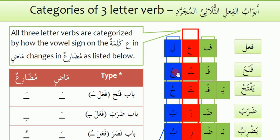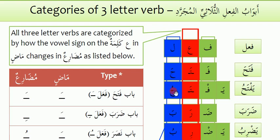Now if you want to change to the present tense or the future tense, what do you do? We add Ya — which denotes 'he' or 'him' — at the beginning. And on the last Kalma, the Lam Kalma, we change the Fath and bring the Dhamma.